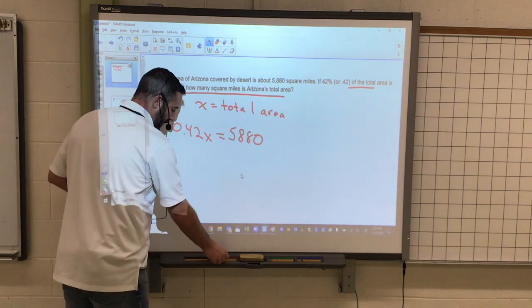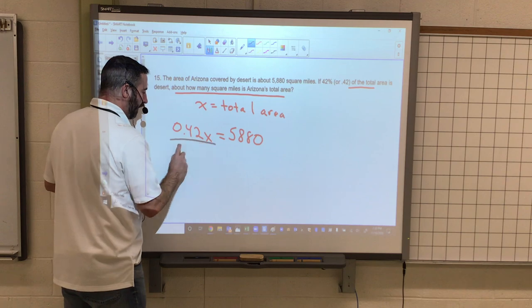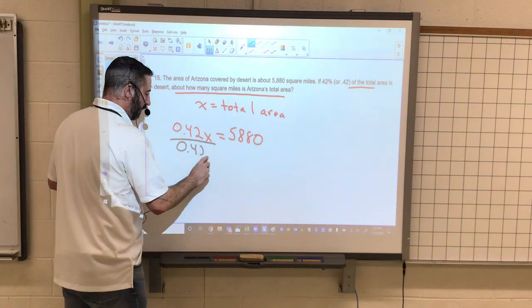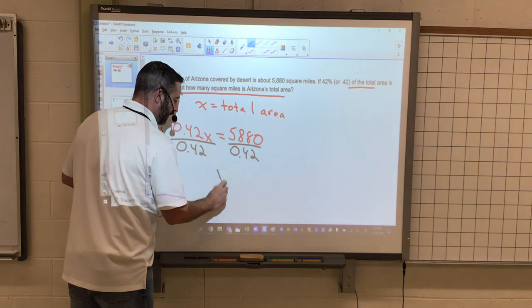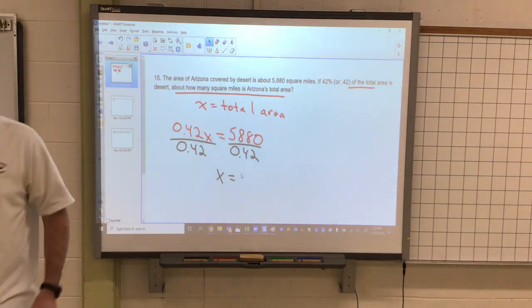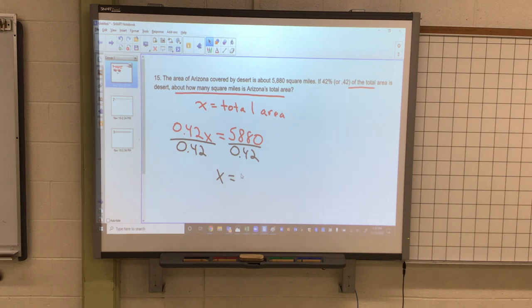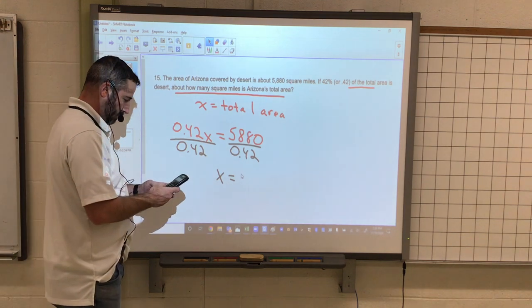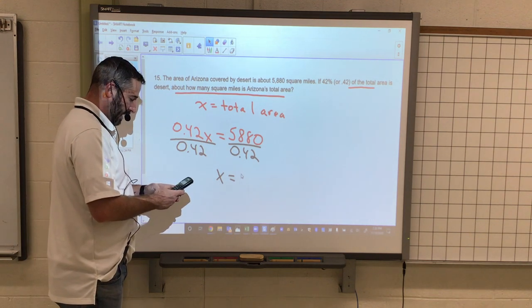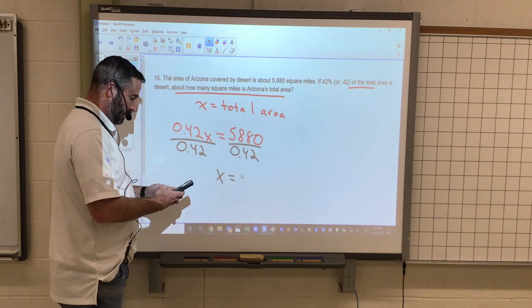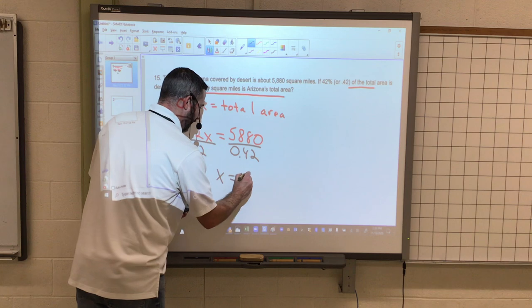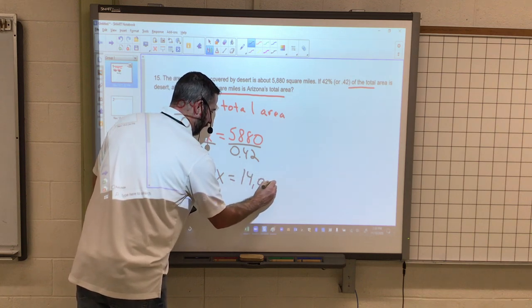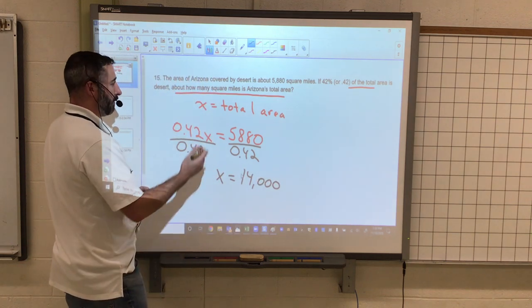So this is a one-step equation at this point, where I'm going to divide by 0.42. Therefore X, or my total area, will be 5,880 divided by 0.42, and that gets us X equals 14,000. We're dealing with square miles.